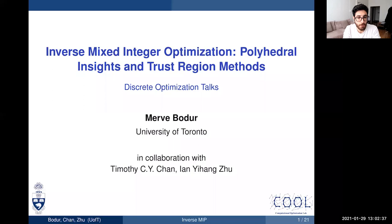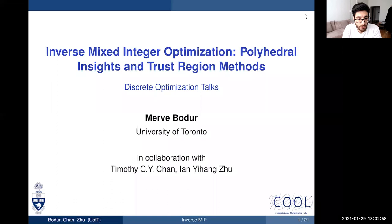Mervyn is an assistant professor in the Department of Mechanical and Industrial Engineering at the University of Toronto. She did her PhD at Wisconsin–Madison and a postdoc at Georgia Tech. Her research interests span integer programming, multi-objective optimization, and applications in energy systems, transportation, etc. Today she'll be speaking about inverse mixed integer optimization.